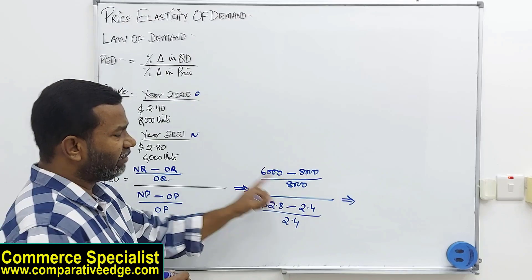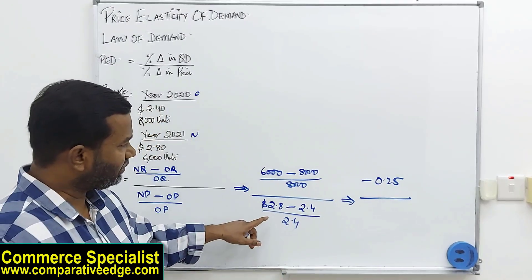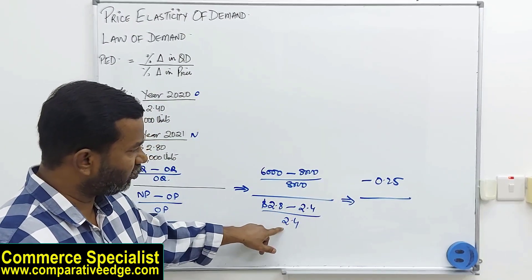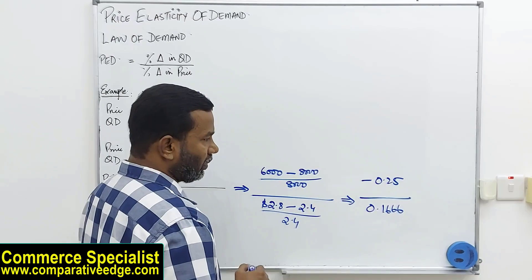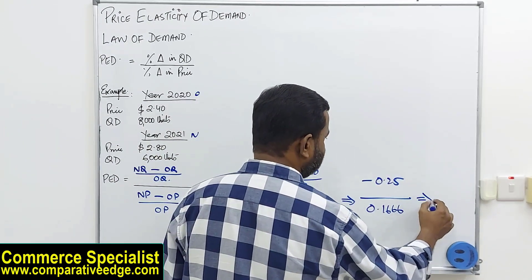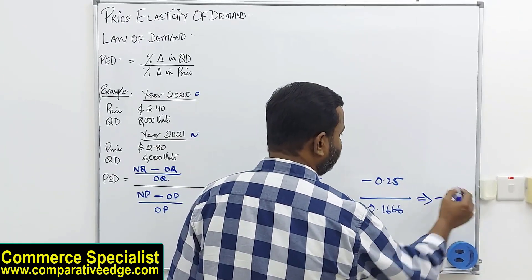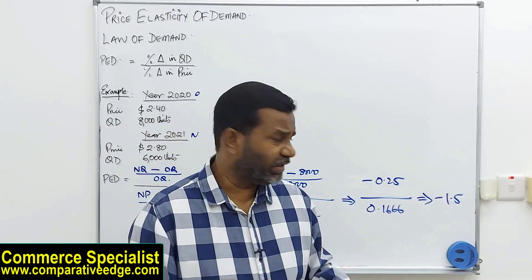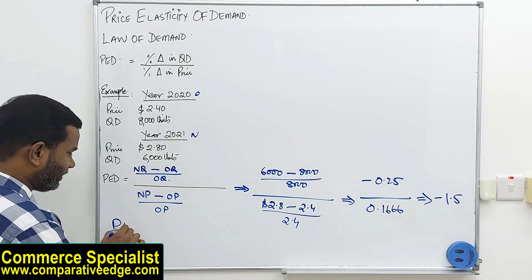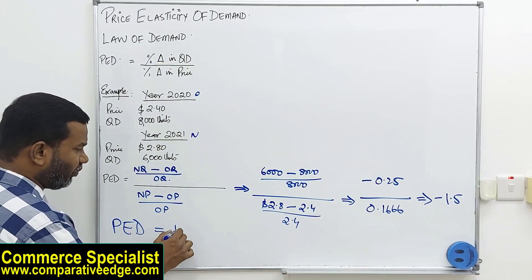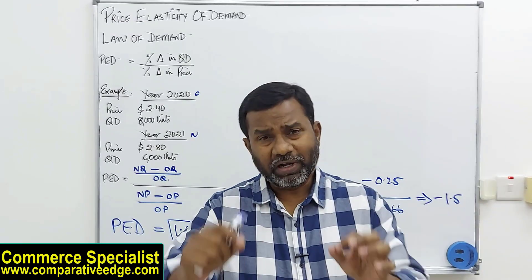Solving this: 6,000 minus 8,000 divided by 8,000 gives us −0.25. Then 2.8 minus 2.4 divided by 2.4 gives us 0.1666. Dividing −0.25 by 0.1666 gives us −1.5. We ignore the minus sign, so the price elasticity of demand for this product is 1.5.